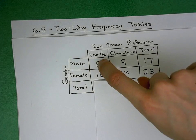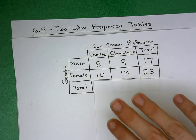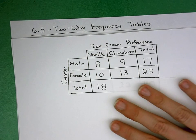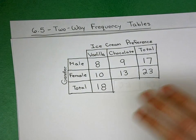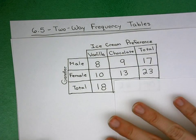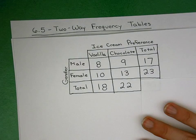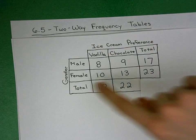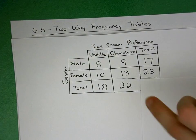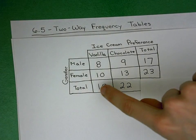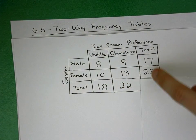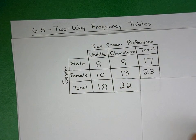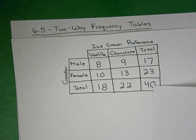If eight males prefer vanilla and 10 females prefer vanilla, that makes 18. Nine prefer chocolate plus 13 prefer chocolate makes 22. To check that you've accounted for all your data, both 18 plus 22 and 17 plus 23 should both add to 40. That's called our grand total — the total number of people surveyed.